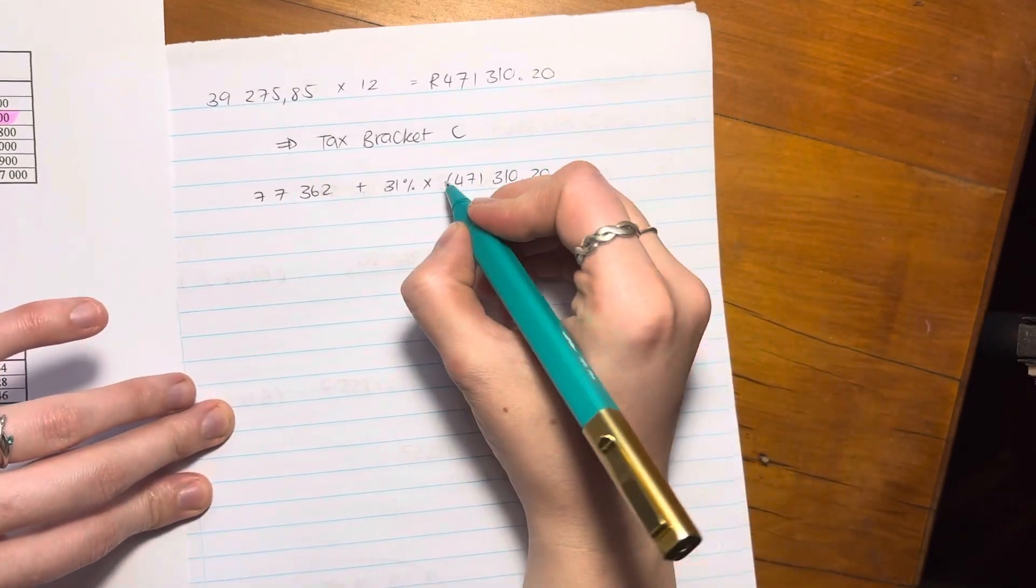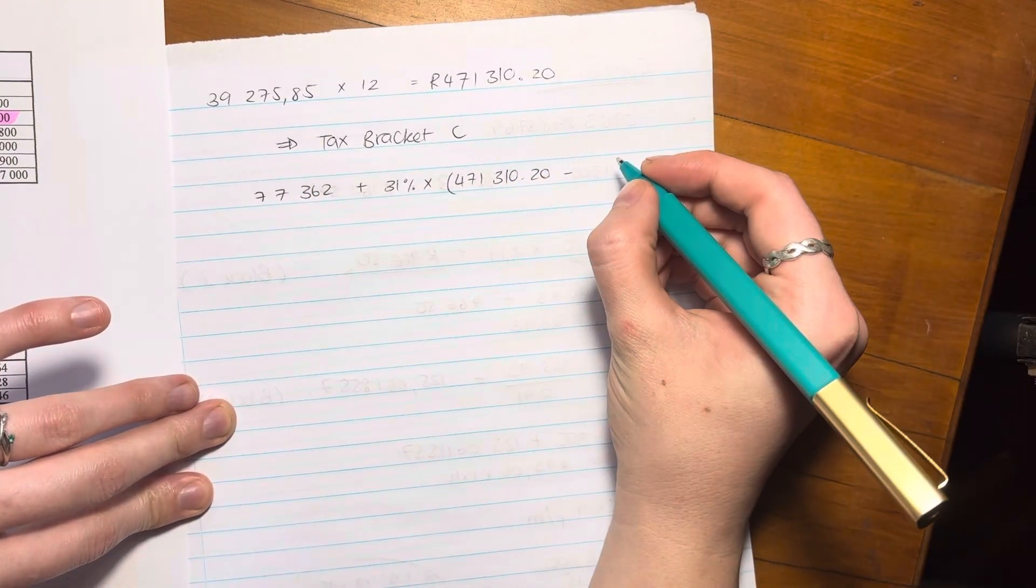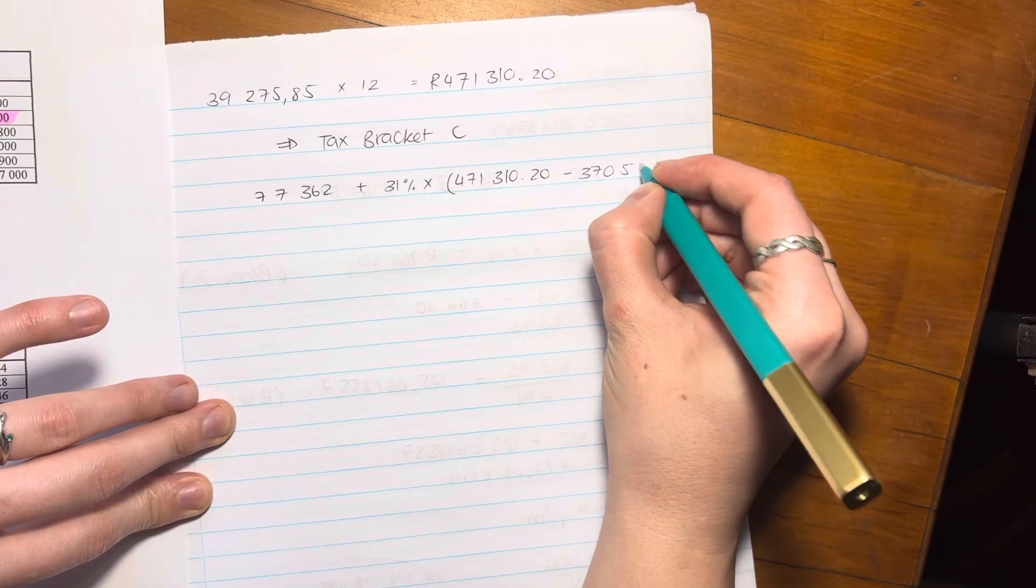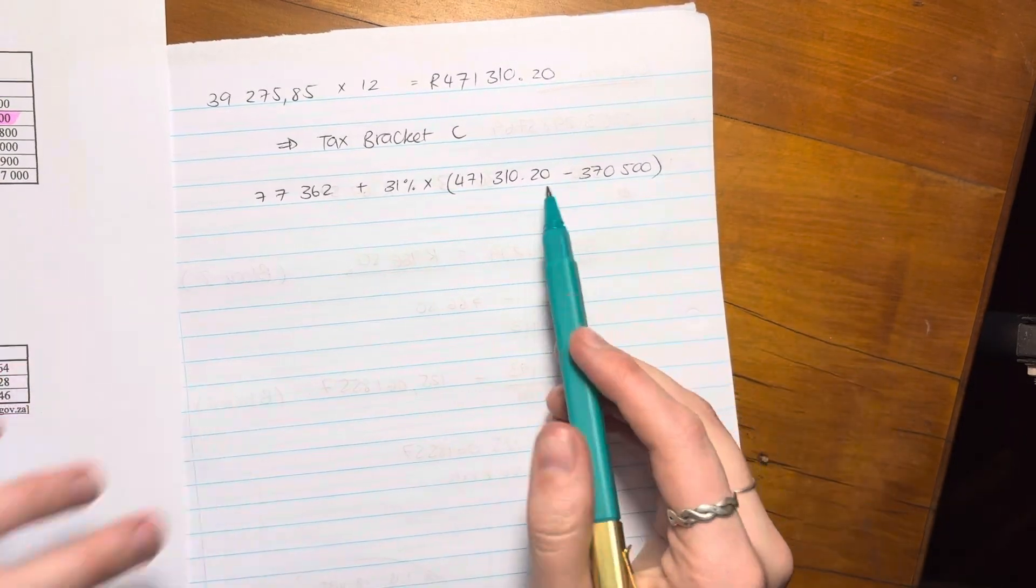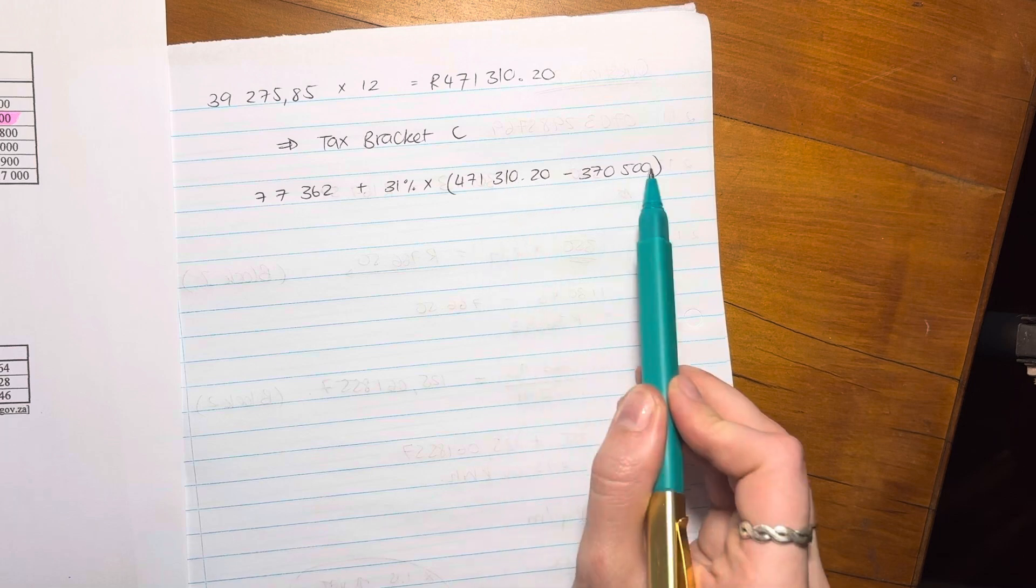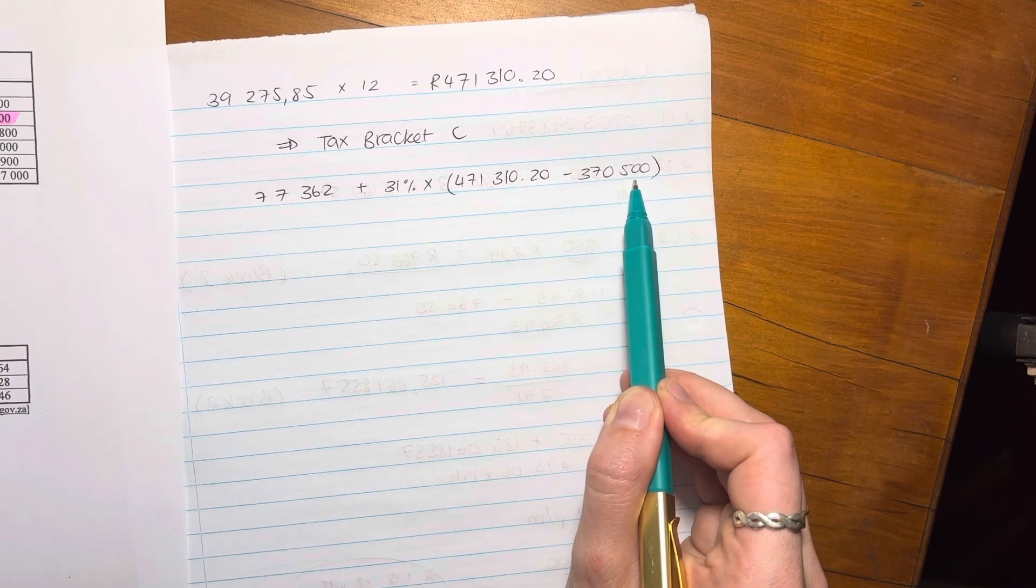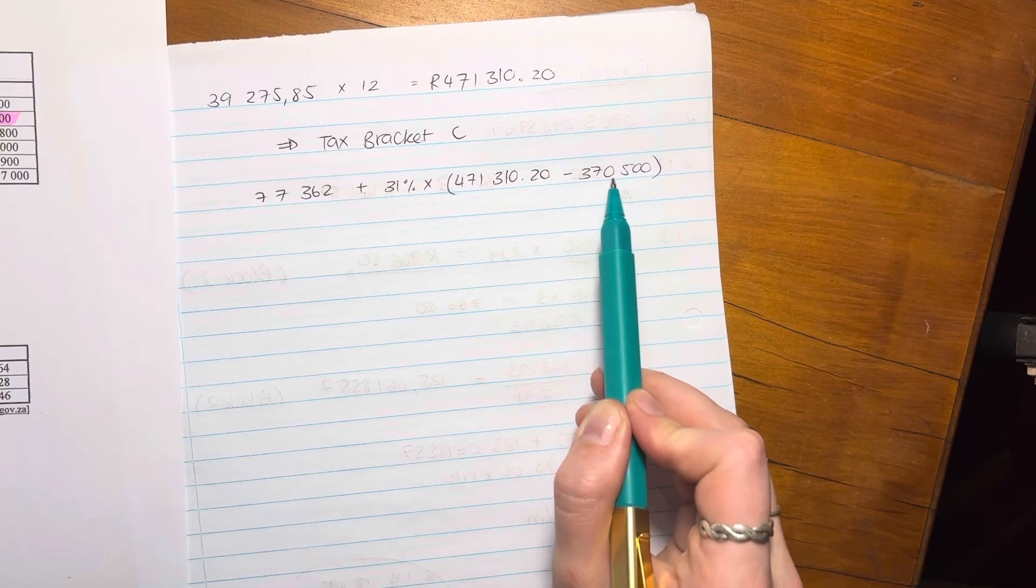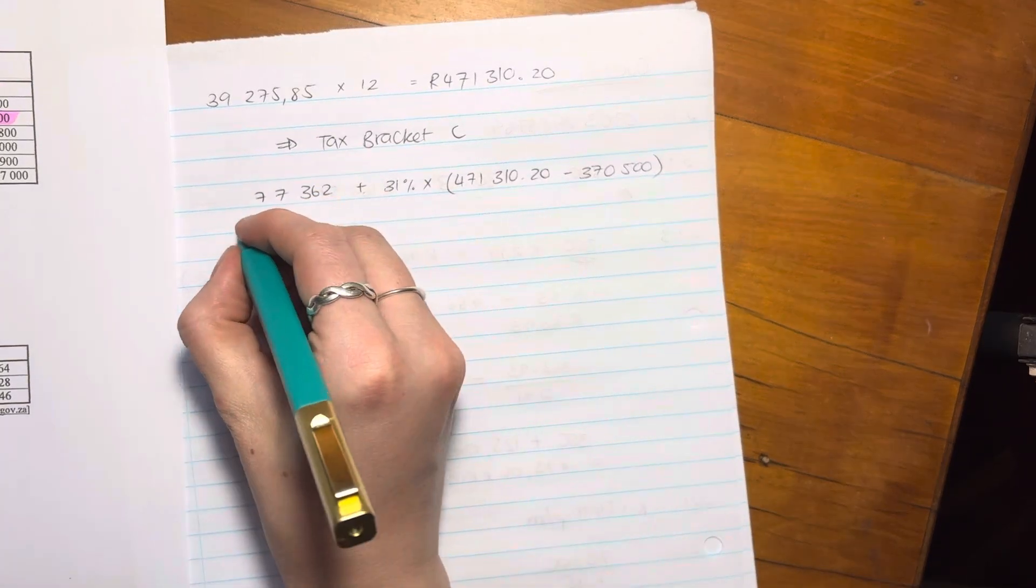So you have to basically say her total annual taxable income minus that amount, right? Because this is the amount that is above 370, right? You're not going to times this whole thing by 31%. It's only the amount that is above 370. So be careful with your calculations.